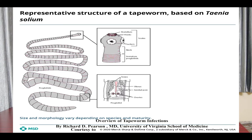The rostellum hooks and suckers help as holdfast organs, with the help of which the tapeworm firmly attaches to the intestinal mucosa. Often the scolex remains buried in the mucosa. The neck is a constricted region behind the scolex, and this flattened region is a zone of proliferation — the region from which new segments are budded off.